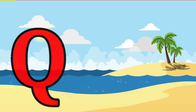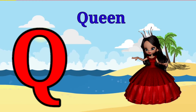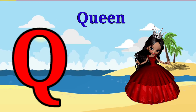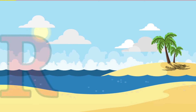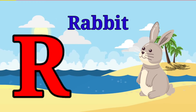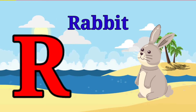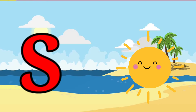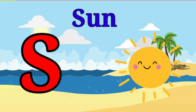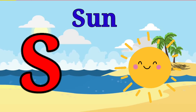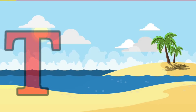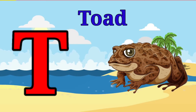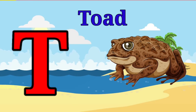Q is for queen, q-q-queen. R is for rabbit, r-r-rabbit. S is for sun, s-s-sun. T is for toad, t-t-toad.